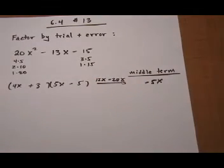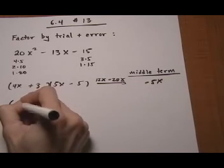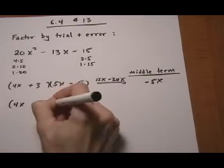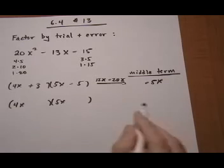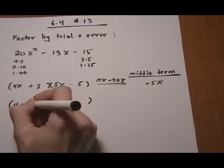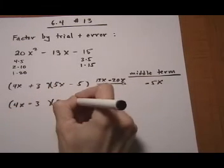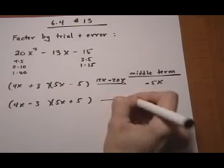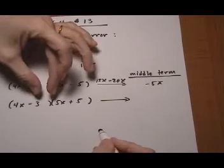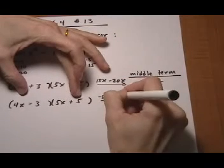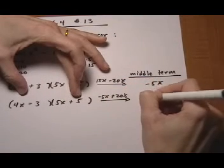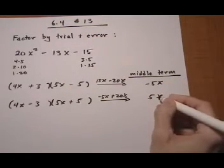4x, 5x, and if I switch the signs I'll go ahead and do that so you see what's going to happen there. Middle term is going to be minus 15x plus 20x. That's just going to switch the sign of my middle term.